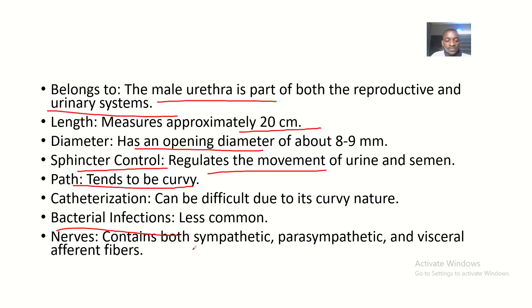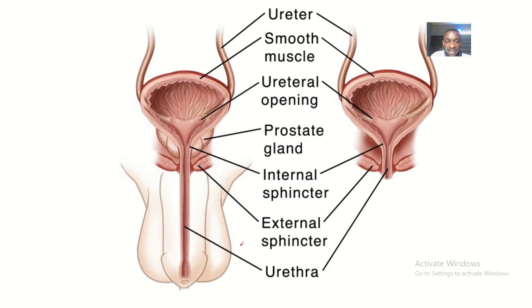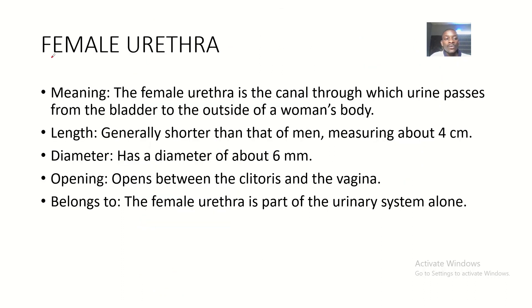The male urethra contains both sympathetic and parasympathetic and visceral afferent nerves. To recap visually: this is the prostatic urethra, here is the membranous urethra, and the long one is the penile urethra.